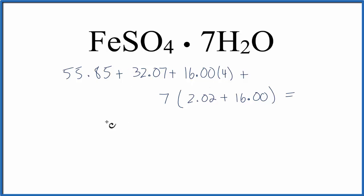So we can add this part here up, that gives us 151.92 grams per mole, plus the seven H₂O's, that should equal 126.14 grams per mole. And when you add them together, you get 278.06 grams per mole. And that's the molar mass of iron 2 sulfate heptahydrate.